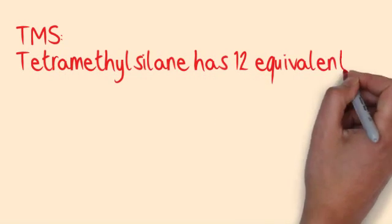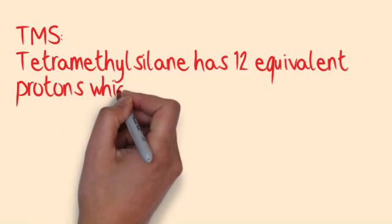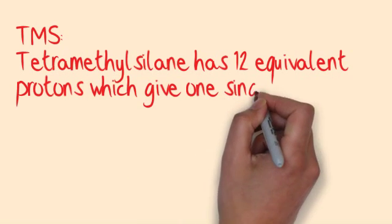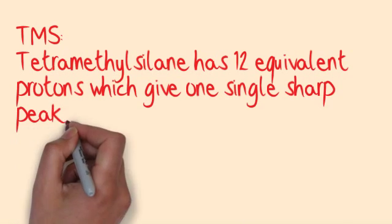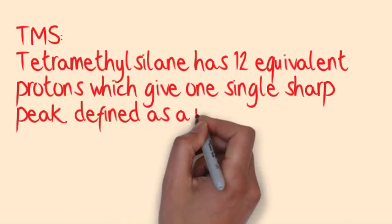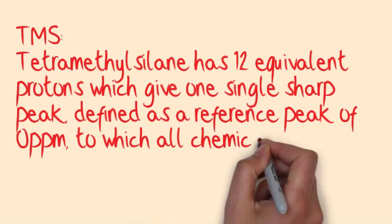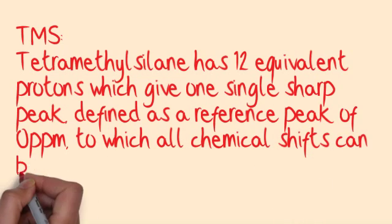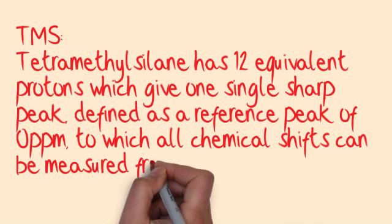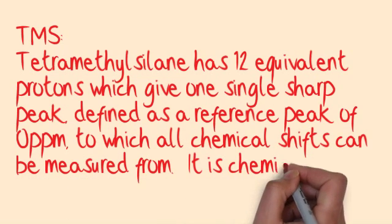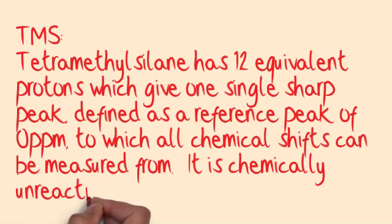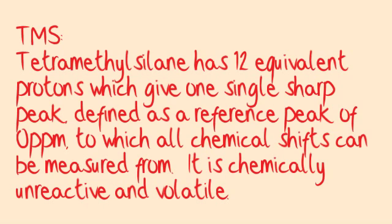TMS, or tetramethylsilane, has 12 equivalent protons which give one single sharp peak defined as a reference peak of 0 ppm, to which all chemical shifts can be measured from. It is chemically unreactive and volatile.